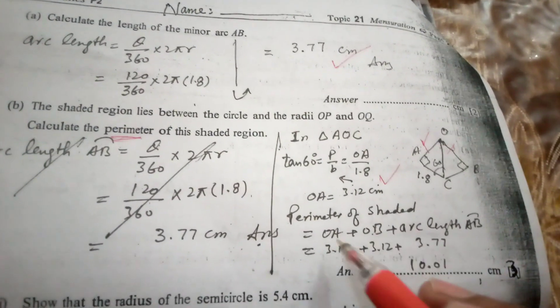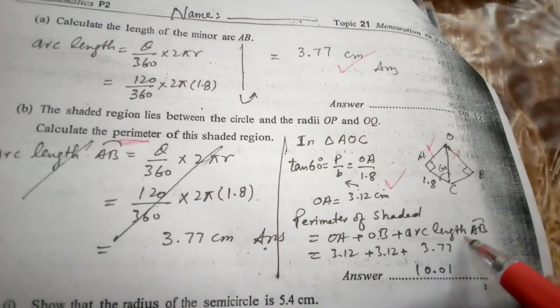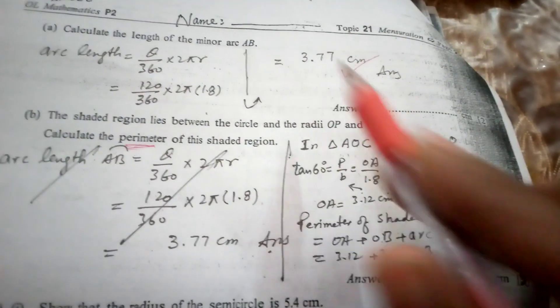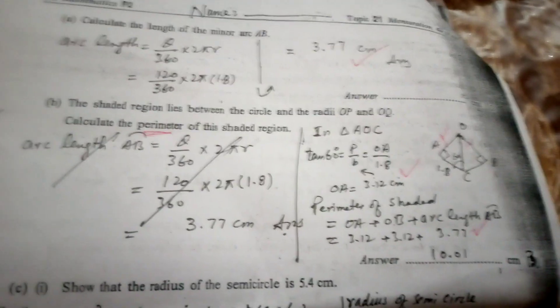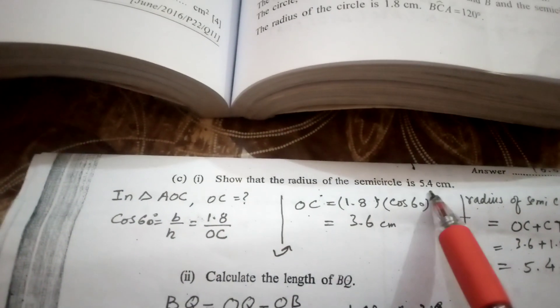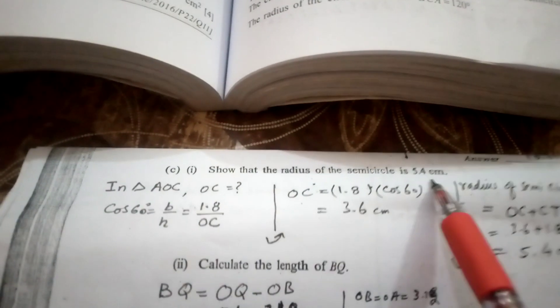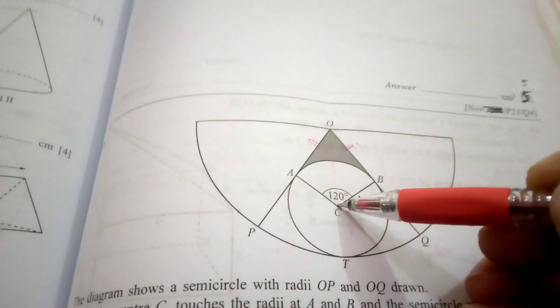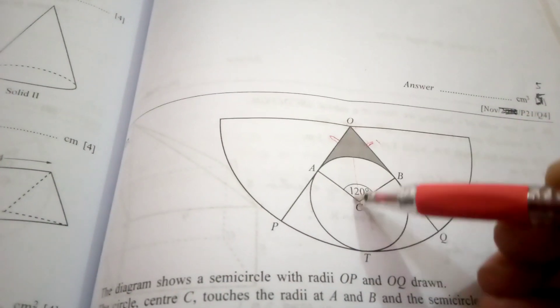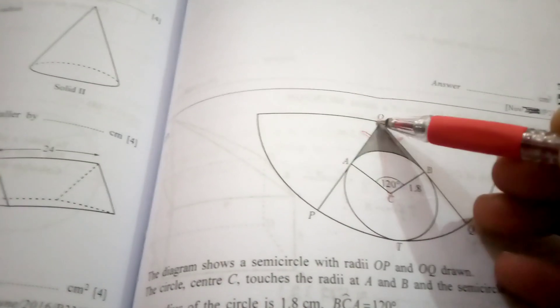The perimeter of the shaded region is OA plus OB plus the arc length already calculated. For the next part, we need to show that the radius of the semicircle is 5.4 centimeters. The radius of the larger semicircle is OC plus CT, where CT is 1.8 centimeters.